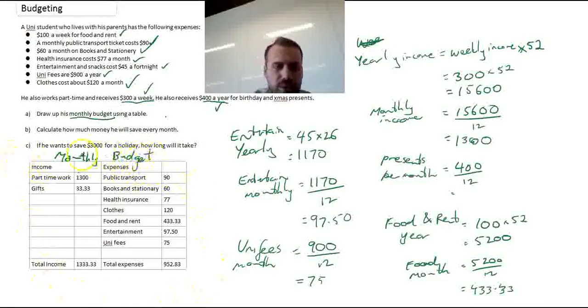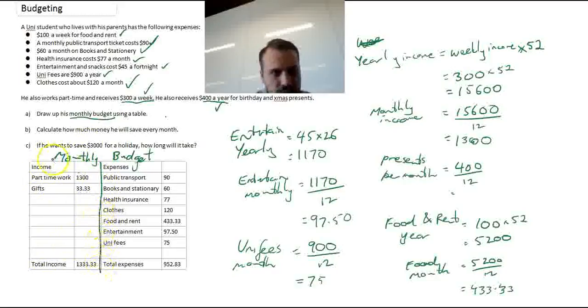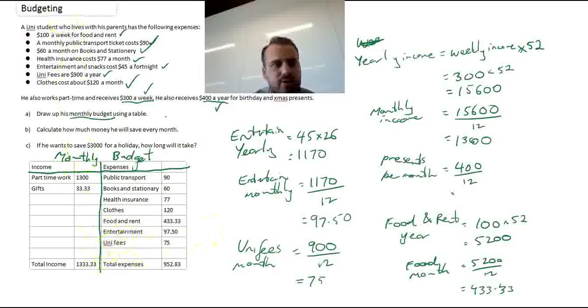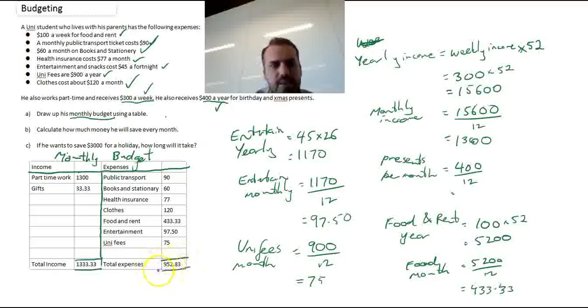The good news is that we have now finished our monthly budget. Now, when you do a table like this, you're going to use a pencil or a pen, ruler, and you'll do all of that by hand, not typing it onto a computer like I have. Monthly budget, income. All of your income's on the left-hand side and all of your expenses are on the right-hand side. Totals down the bottom. Now, think about this for a second. This is good news for whoever this person is because their total income is 1,333. That's how much money they're making every month and their total expenses are only 952. This means that every month they're going to save some money. And we can do that work now.